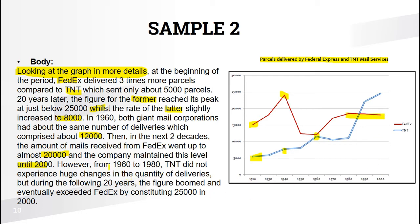However, from 1960 to 1980, TNT didn't experience huge changes in the quantity of deliveries. But during the following 20 years, the figure boomed and eventually exceeded FedEx — meaning it became more than FedEx — constituting 25,000 in 2000. This body paragraph is simple enough with a little bit of complex structures, though not difficult to write.